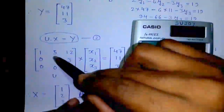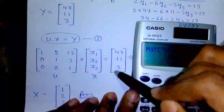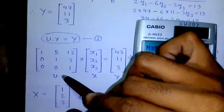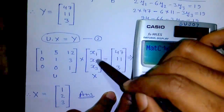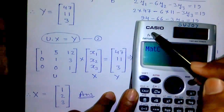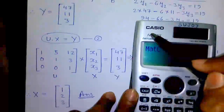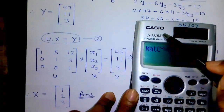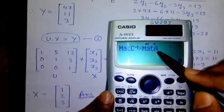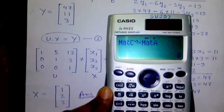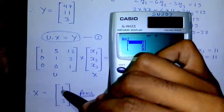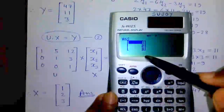Calculator trick number 3: if you have matrix U and matrix Y, you can find out matrix X by the formula matrix U inverse into matrix Y equals matrix X. I have stored matrix U as matrix C and matrix Y as matrix A, so matrix C inverse into A gives matrix X: 1, 2, and 3.